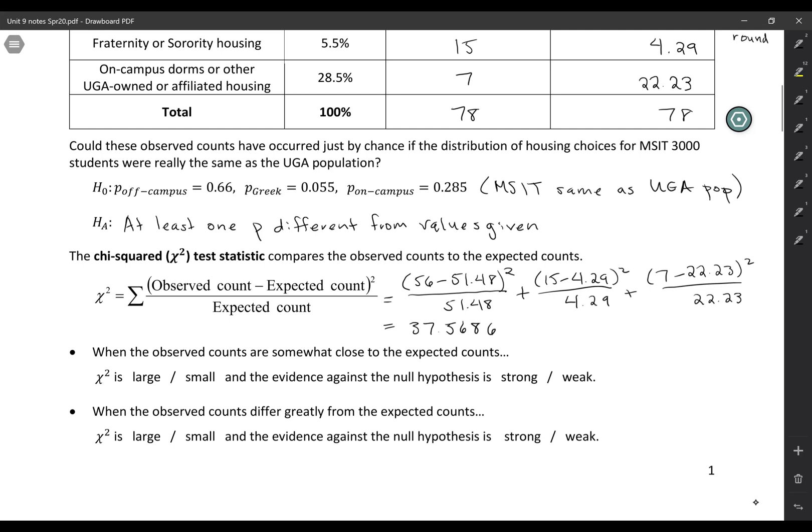All right, so if the observed counts are somewhat close to the expected counts, right, the difference here is going to be small. And so you're going to end up with a small chi-squared statistic. And if what you observed is pretty close to what you would have expected based on the null being true, then that means that your data gives weak evidence against the null. Right, because your actual data was pretty close to what you'd expect it to be, right? That's not going to be very much evidence.